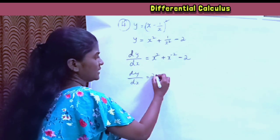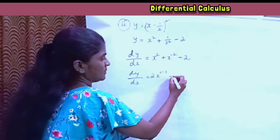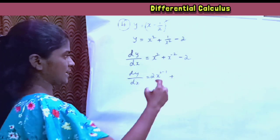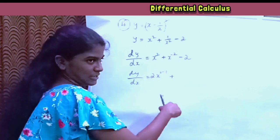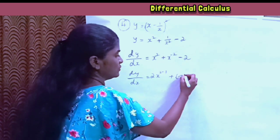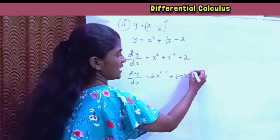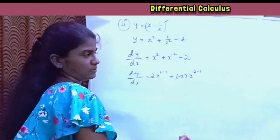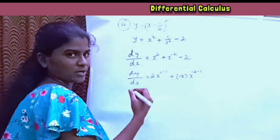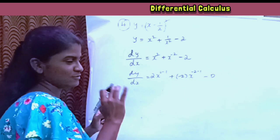So: 2 into x to the power of 2 minus 1, plus minus 2 into x to the power of minus 2 minus 1. The constant term minus 2 differentiates to 0.